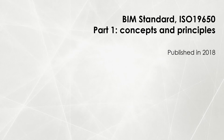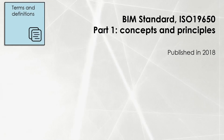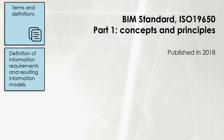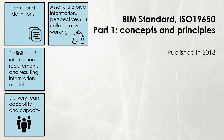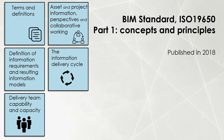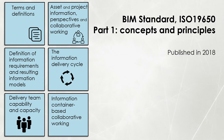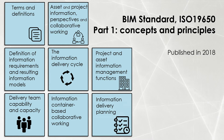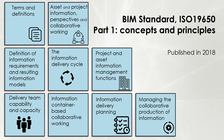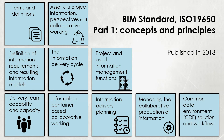BIM standard ISO 19650 Part 1 is about concepts and principles. Different sections of this document include terms and definitions, definition of information requirements and resulting information models, delivery team capabilities and capacity, assets and project information perspectives and collaborative working, the information delivery cycle, information container-based collaborative working, project and asset information management functions, information delivery planning, managing the collaborative production of information, and common data environments (CDE) solution and workflow.